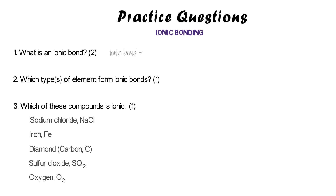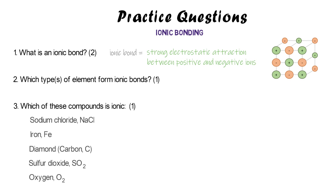The definition of an ionic bond is that it is a strong electrostatic attraction — electrostatic is about positives and negatives. This time it's between positive ions and negative ions; the positive and negative ions are attracted to each other. Those dotted lines in this diagram represent your ionic bonds.